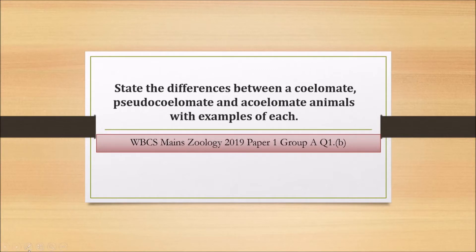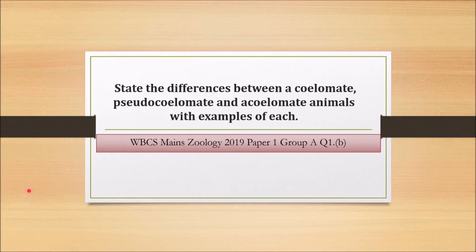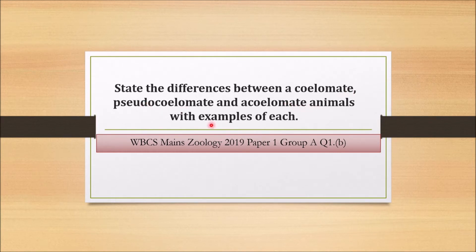Welcome to our channel HOME STUDY 2014-7. Today's question is from WBC Men's Zoology 2019, Paper 1, Group A, Question Number 1B: state the difference between acoelomate, pseudocoelomate, and coelomate animals with examples of each.